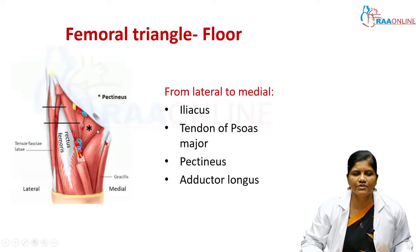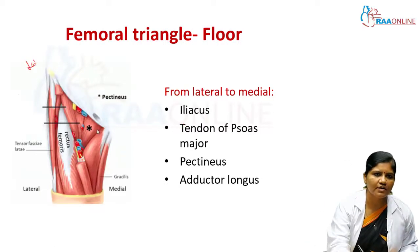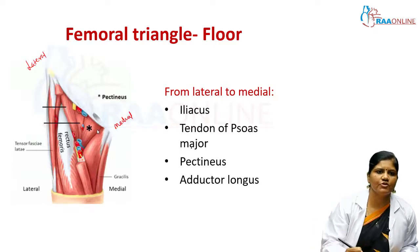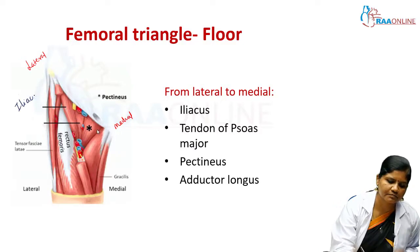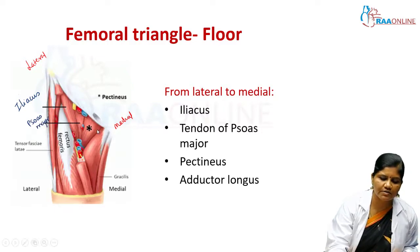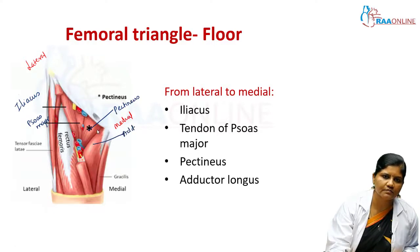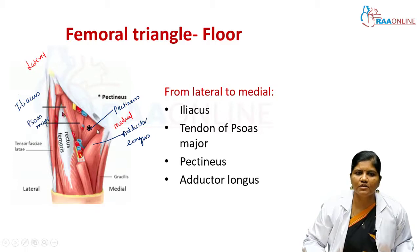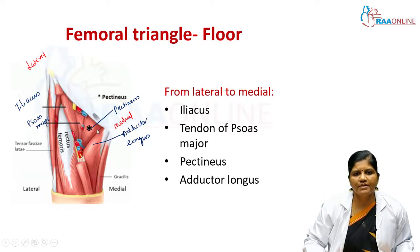The floor of the femoral triangle is formed by four muscles, from lateral to medial: iliacus, psoas major, pectineus, and adductor longus. The floor is mainly composed of these muscles.